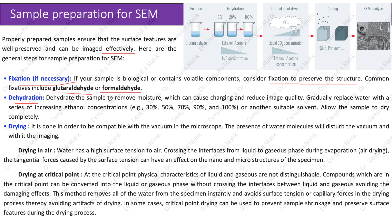The next step is dehydration. Dehydrate the sample to remove moisture, which can cause charging and reduce image quality. Gradually replace water with a series of increasing ethanol concentrations — for example 30%, 50%, 70%, 90%, and finally 100% — or another suitable solvent. Allow the sample to dry completely.